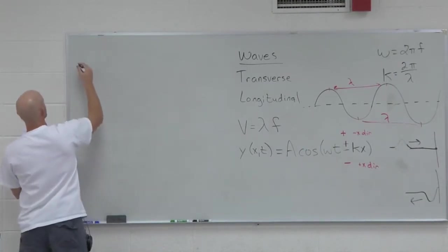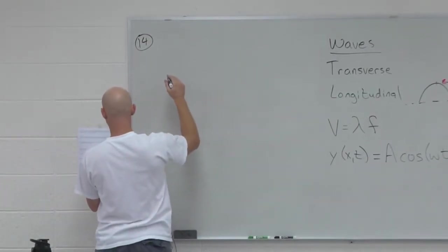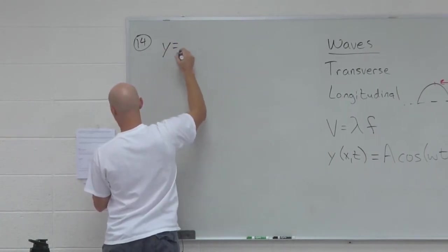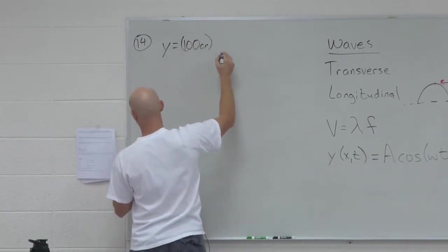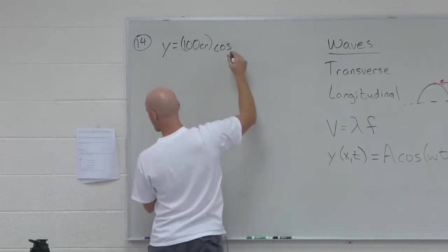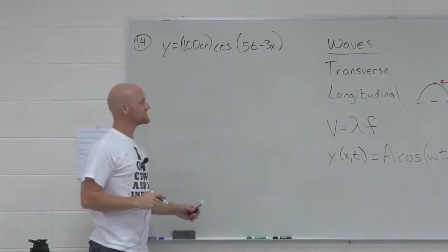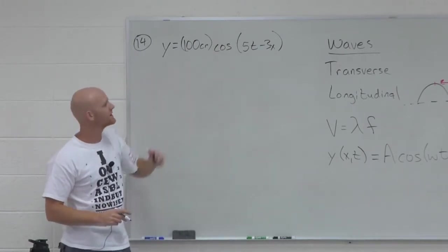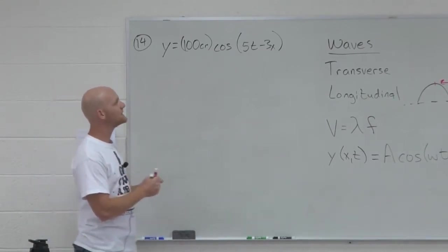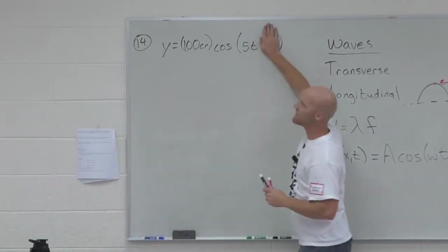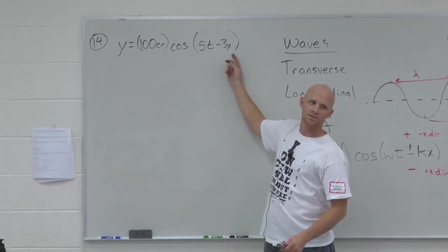Let's say we look at number 14 there. Number 14 says we have the equation of motion on a string, y equals 100 centimeters times cosine of 5t minus 3x. I will fix that on your sheet. My parentheses were just a little off. That's what they should look like. If you notice, the equation I gave you in problem number 11 looked like that. The only term that's different here is this guy, this little added term here.